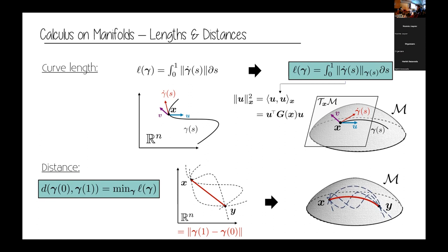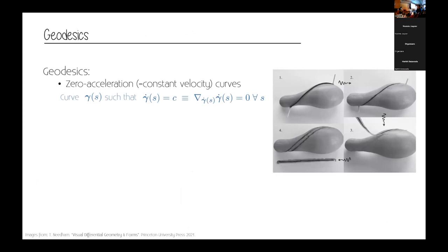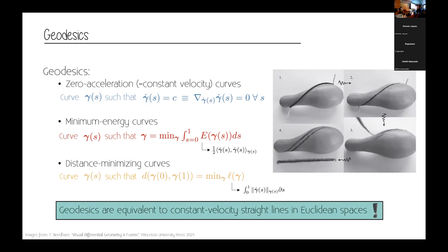The constant-velocity curves of minimum length are called geodesics — an important concept in Riemannian geometry because they generalize constant-velocity straight lines to Riemannian manifolds. Geodesics have zero acceleration — they are constant-velocity curves that minimize the kinetic energy of the curve, and by minimizing energy they also minimize the distance between two points. To go with minimum distance from x to y, you follow a geodesic. They are equivalent to constant-velocity straight lines in Euclidean space — you can think of them as taking a rope, wrapping it tightly around your surface, and when you take it off you get a straight line — a straight line as seen by a small entity living on the manifold.